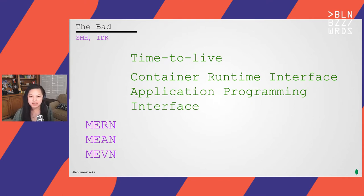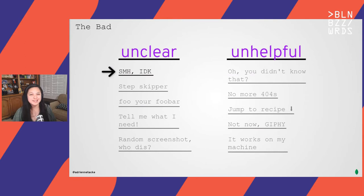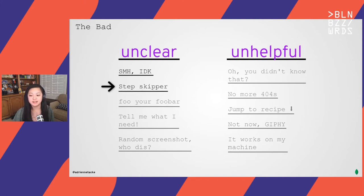And we all know MERN, MEAN, MEVIN — or again, that's the assumption. If you haven't been in the web development space, it's just better to spell it out. Be explicit — make no mistake about what you're talking about. Spell out that these mean Mongo, Express, Node, with the third letter being the JavaScript front-end framework you're using: React, Angular, or Vue. That's SMH IDK, and that's something we should at a bare minimum try to watch out for.